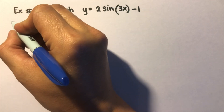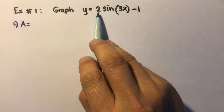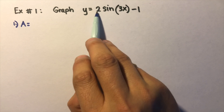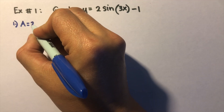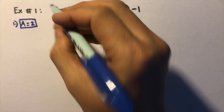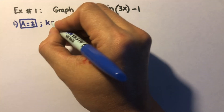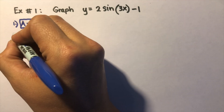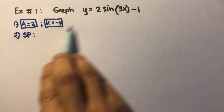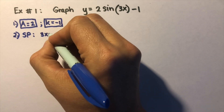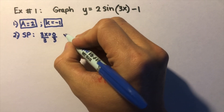Let's take the first example. Step one: determine the amplitude. The amplitude in this problem is 2 — we take the absolute value of the number in front, so the amplitude is 2. Next, the midline k is negative 1. Step two: determine the starting point or phase shift by setting the expression inside the parentheses equal to zero and solving for x. Dividing both sides by three, x equals zero. So the starting point is x = 0.